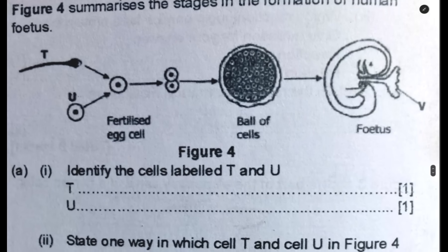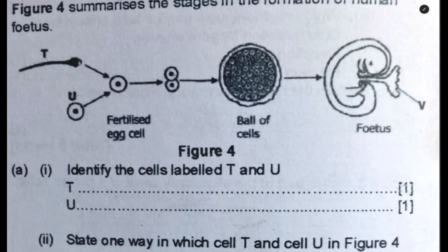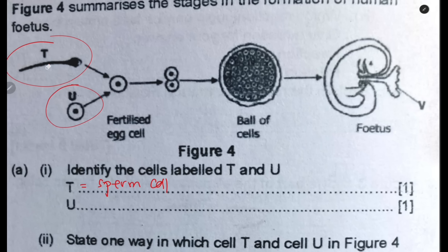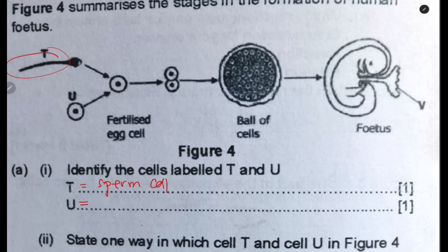Identify the cells labeled T and U. Cell T is the sperm cell — you can identify it by its tail. It is important to know the difference between the sperm cell and other cells like the root hair cell. Cell U is the ovum, or the egg.